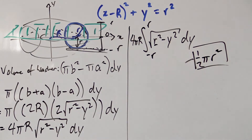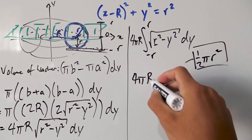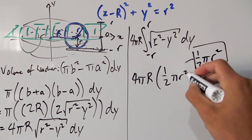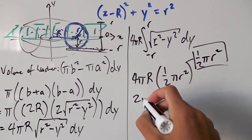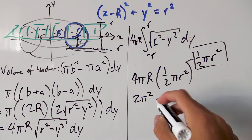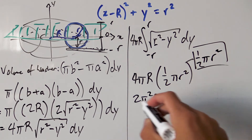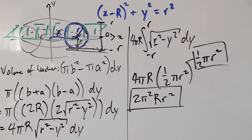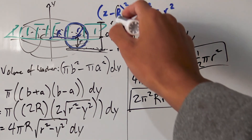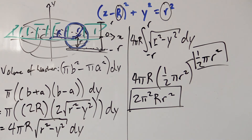Plugging that in, we have 4πR times (1/2)πr², which simplifies — dividing 4 by 2 — to 2π²Rr². That is our final formula for the volume of a doughnut. If you know the equation of the circle that the doughnut is based from, you pull out capital R and little r and plug them into this formula to get the volume. That's pretty much it for this video — hope everyone enjoyed, and I'll see everyone next time.